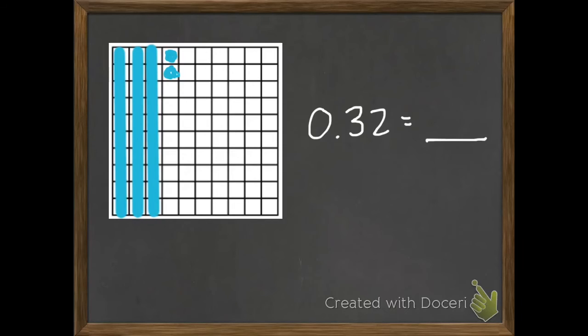And then we write it as a fraction. Which we have thirty-two shaded. Out of a total one-hundred equal pieces. So thirty-two hundredths equals thirty-two hundredths.